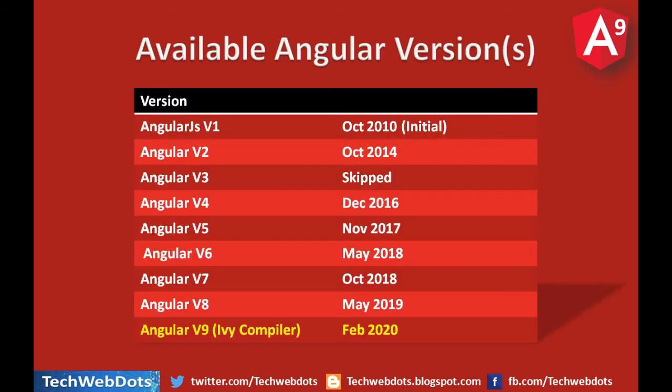Looking at the available versions of Angular: version 1 was AngularJS, initially released in October 2010. Since then versions 2, 3, 4, 5, 6, 7, 8, and 9 have been released - version 9 being the latest. Note that version 3 was skipped.